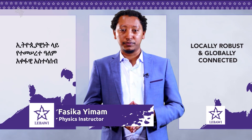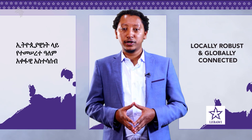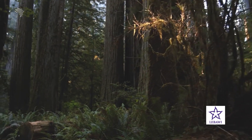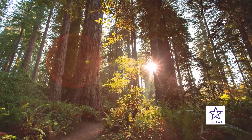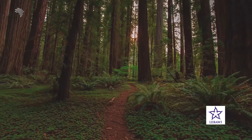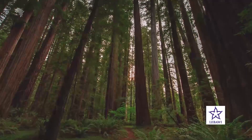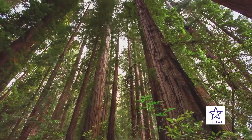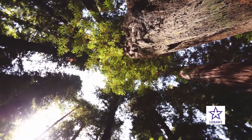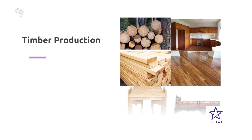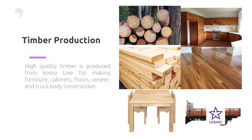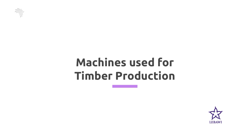We have seen the six types of simple machines and common terms. Now let's see the application of these machines in making furniture from Koso tree. The Koso tree, scientifically called Hagenia Abyssinica, is a multi-purpose tree sparsely distributed in the highlands of Ethiopia. Every part of this tree is used for different purposes such as medicine, timber, firewood, poles, mulch, green manure, and as an ornamental plant. The wood is fine-grained, fairly hard and heavy, with a high calorific value and fragrant during burning. High quality timber is produced from Koso tree for making furniture, cabinets, floors, veneer, and truck body construction.